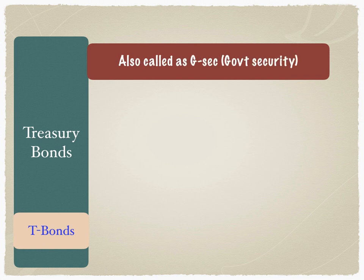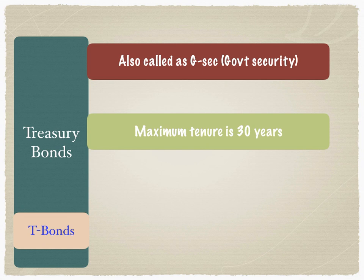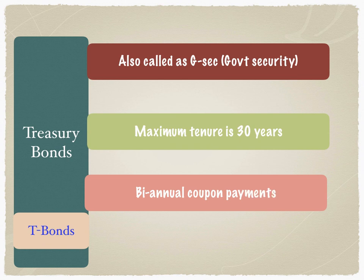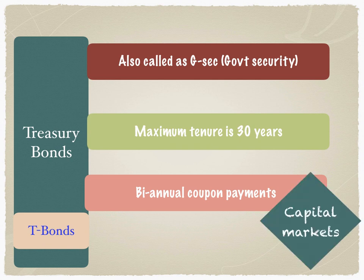Treasury bonds, also called T-bonds — or in the case of the Indian markets, GSEC, G standing for government and SEC standing for security — have a maximum tenure of 30 years in the United States markets. These also have biannual, or semi-annual, coupon payments. The bond market is perhaps the most likely indicator of investor expectations of interest rate hikes or decreases, quantitative easing or quantitative tightening in the U.S. markets. Therefore, yields in the bond markets are watched with a great deal of scrutiny because of the way they represent investor expectations with respect to interest rates. These are traded in the bond market, also called the capital market segment.